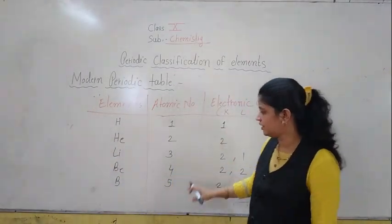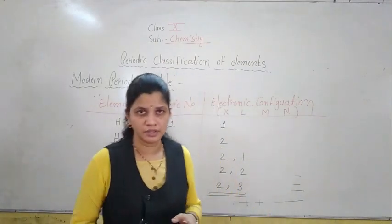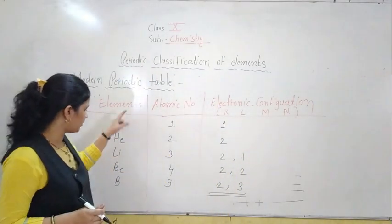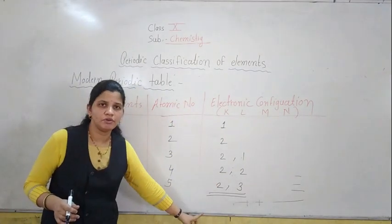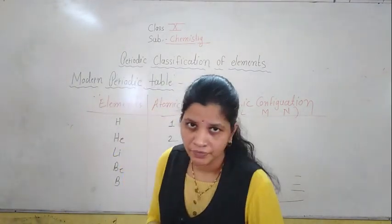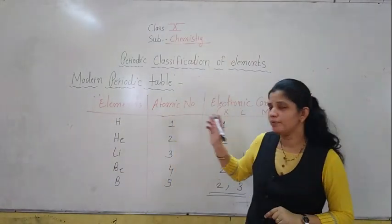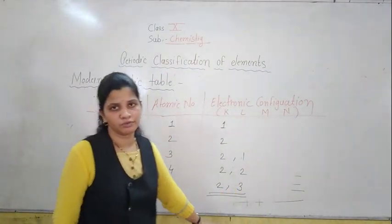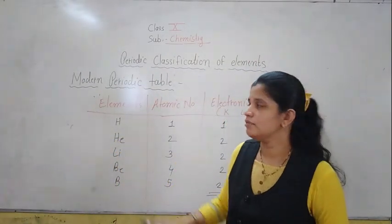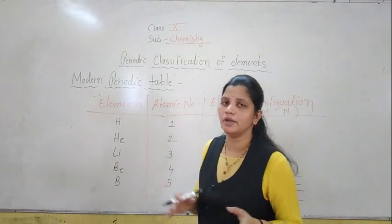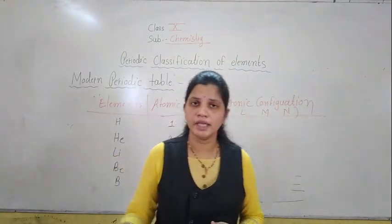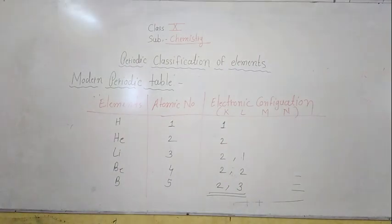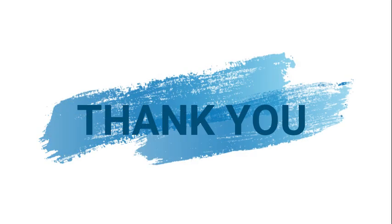I have given only the first five elements' electronic configuration. But you have to complete this chart till 20 elements — first twenty elements with atomic numbers and electronic configurations. After this lecture, during the problem solving period, you have to send me photocopies of all twenty elements' electronic configurations. If you have any doubts regarding this, you can contact me. The next point we will continue in our next lecture. Thank you.